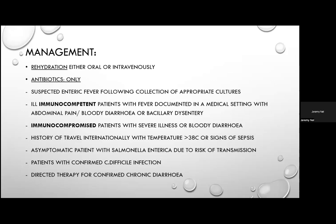In discussion, the IDSA guidelines were designed for a US context where travel internationally usually means leaving America. In our South African context, that criterion is less relevant — South Africa itself would be listed as an indication to treat by those guidelines. In most cases empirically, the practical summary is: severe illness meaning diarrhoea bad enough to require hospitalisation, plus dysentery in most cases, warrants treatment. Fever in immunocompetent patients is included because it reflects systemic toxin effects beyond local GI disease — Shiga toxin-producing strains typically don't cause fever, so requiring fever helps avoid treating those strains.